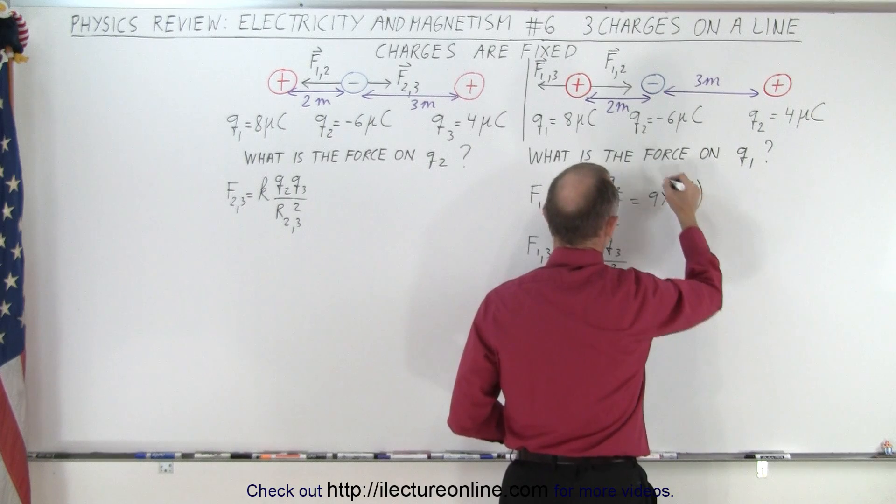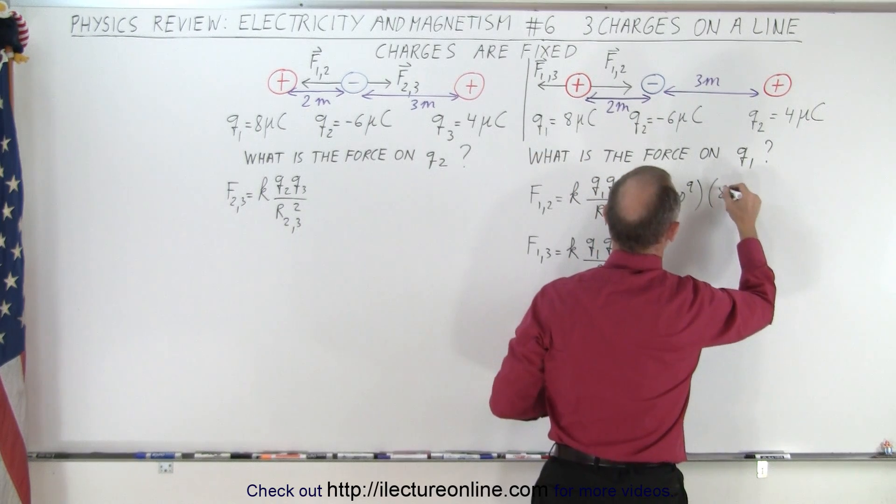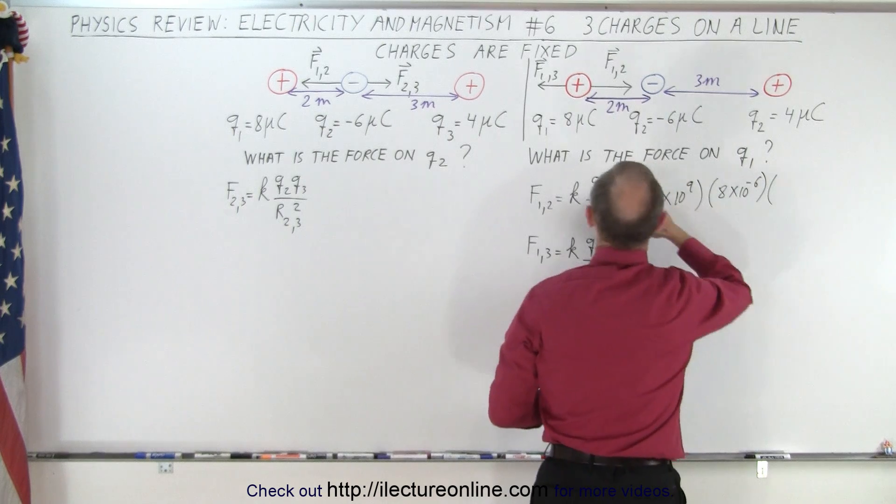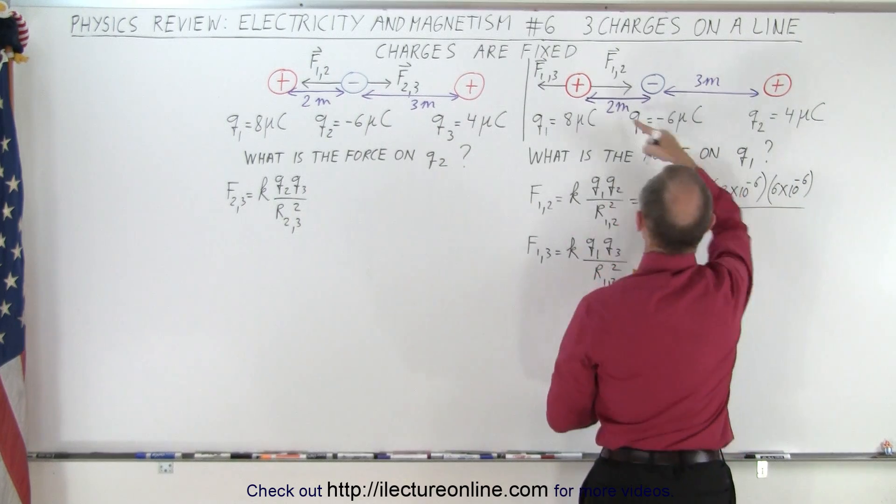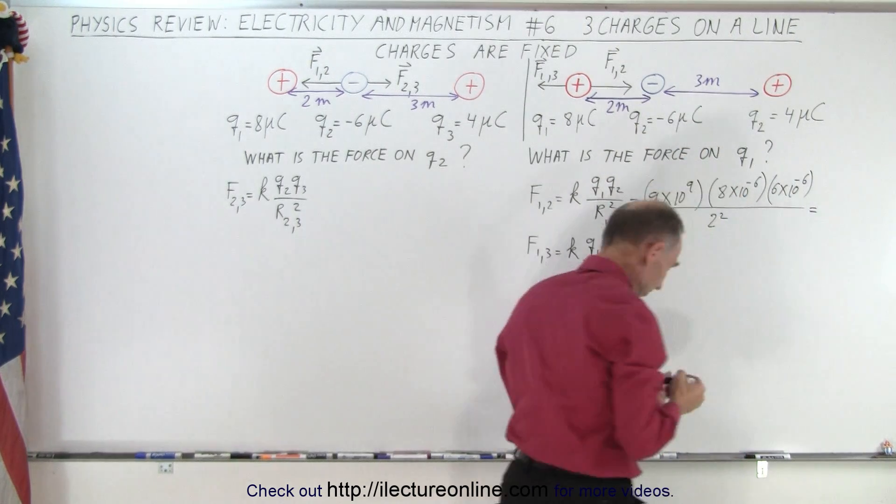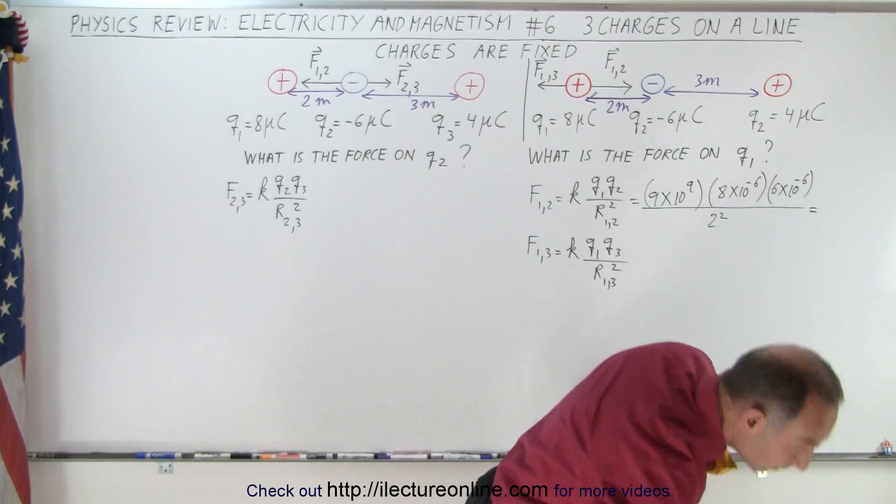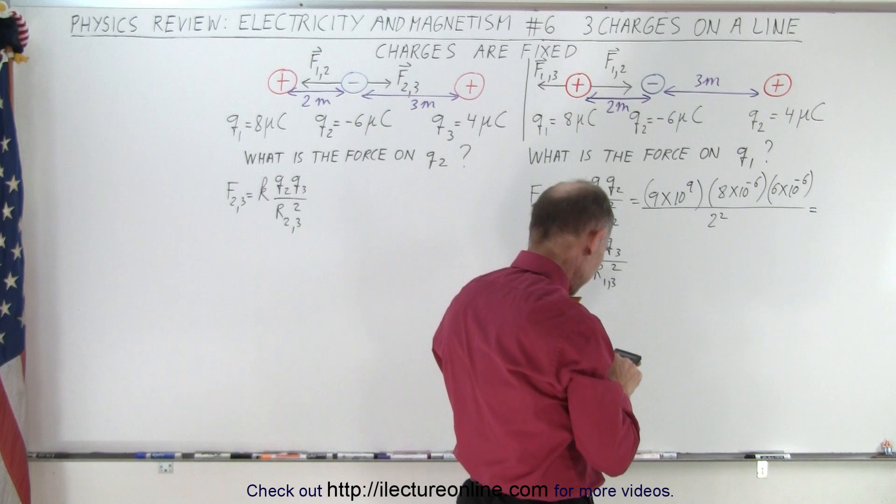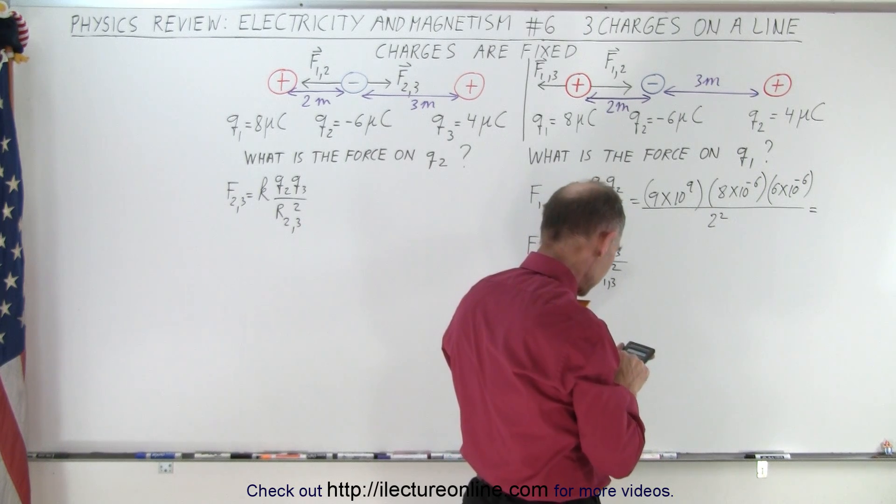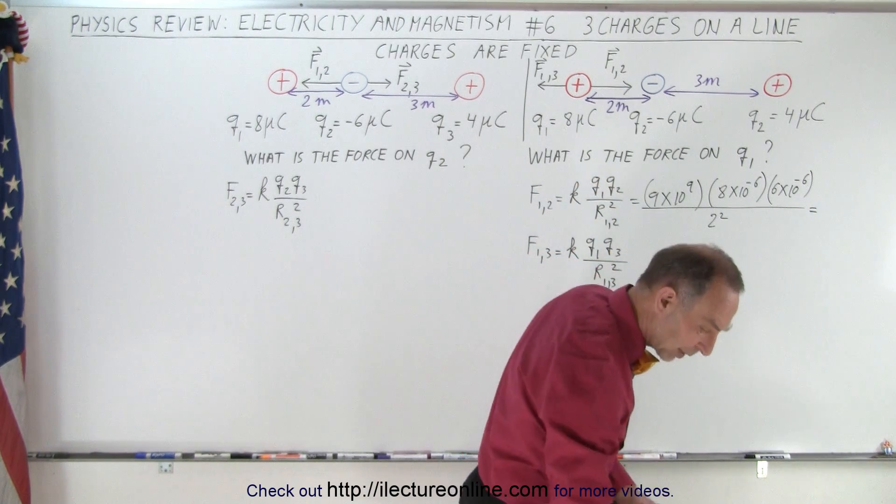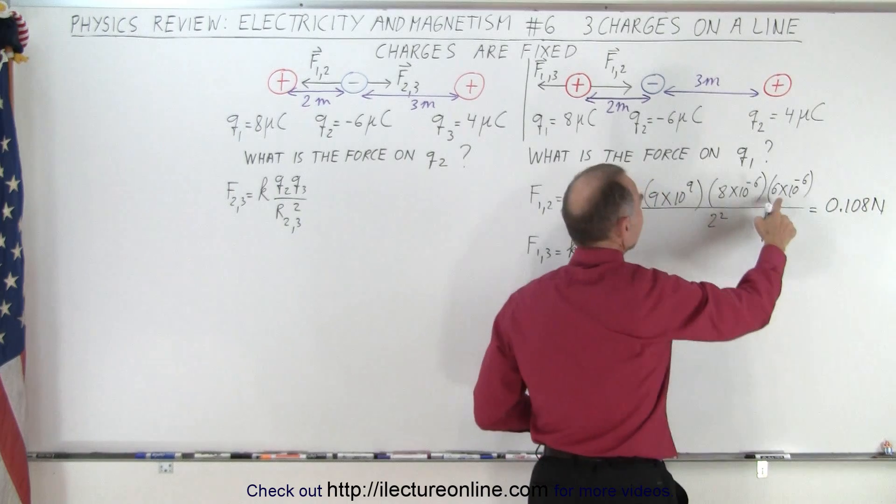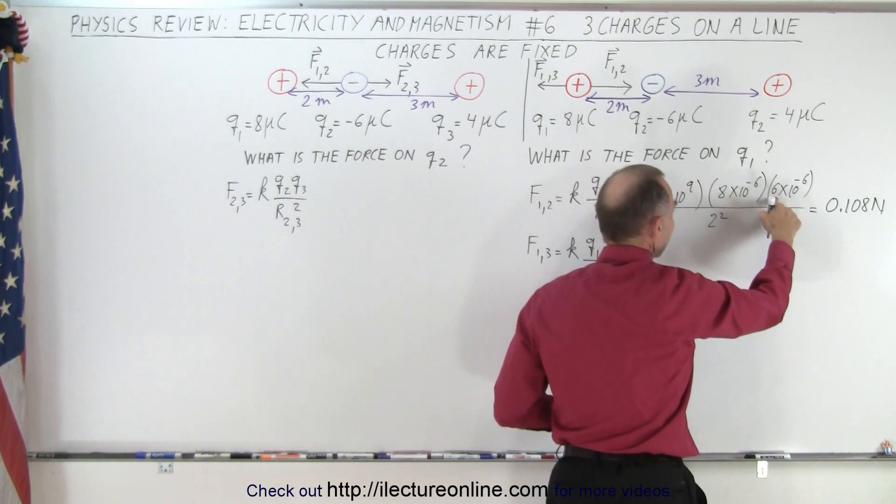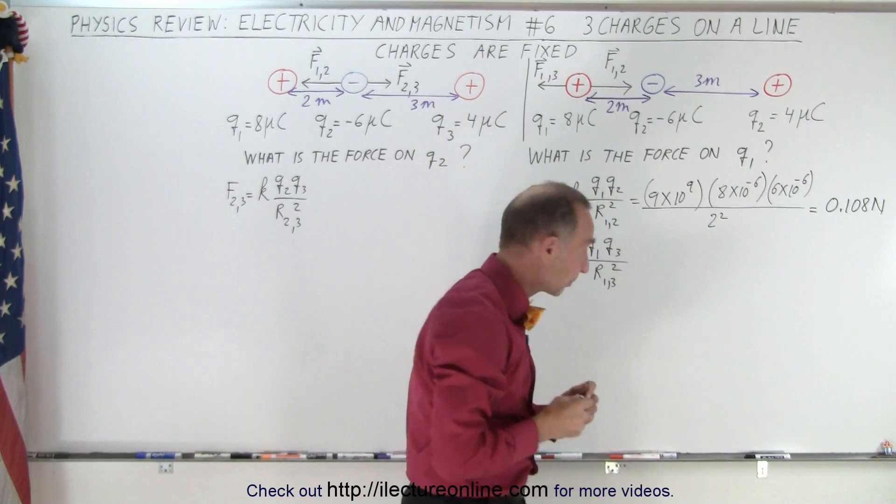This is 9 times 10 to the 9th, so Q1 is 8 times 10 to the minus 6, Q2 is 6 times 10 to the minus 6, divided by the distance between them squared, which is 2 squared. So we have 9e to the 9th times 8e to the minus 6 times 6e to the minus 6 divided by 4 equals 0.108 Newtons. Keep in mind that even though this is a negative charge, we don't have to put a negative there because we're looking for the magnitude of the force.